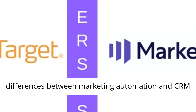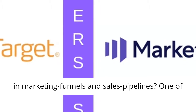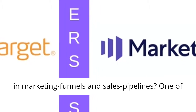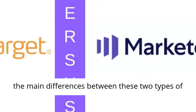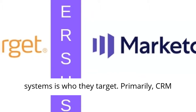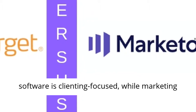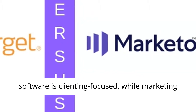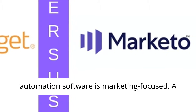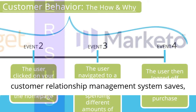So what are the differences between marketing automation and CRM and marketing funnels and sales pipelines? One of the main differences between these two types of systems is who they target. Primarily, CRM software is client focused, while marketing automation software is marketing focused.